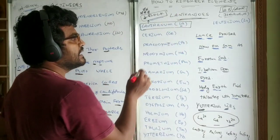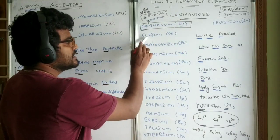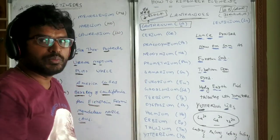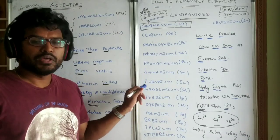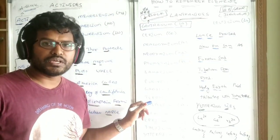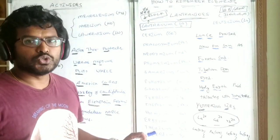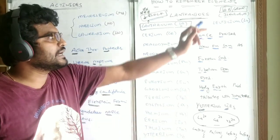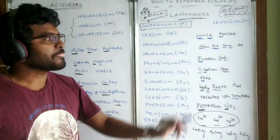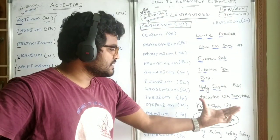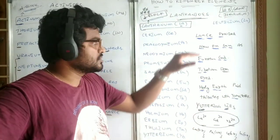Lanthanide elements are lanthanum, cerium, praseodymium, neodymium, promethium, samarium, europium, gadolinium, terbium, dysprosium, holmium, erbium, thulium, ytterbium and lutetium. To remember these lanthanide elements, I created a mnemonic which will be very easy to remember also.